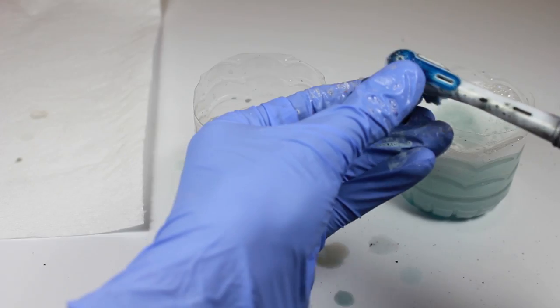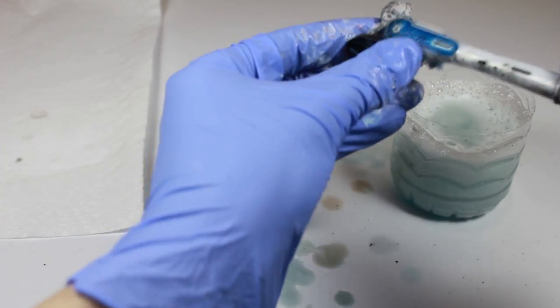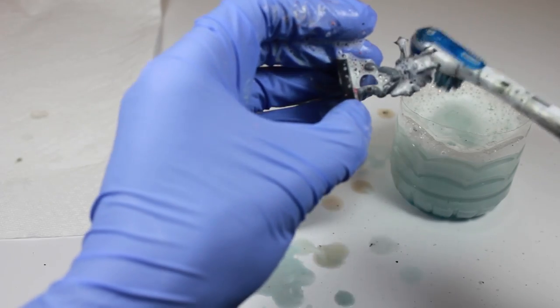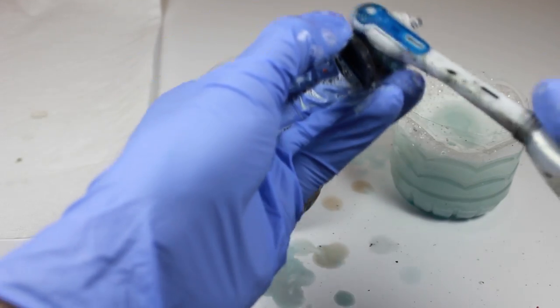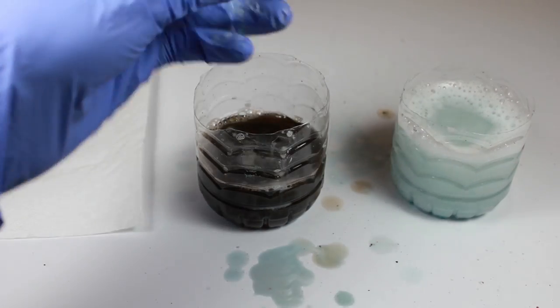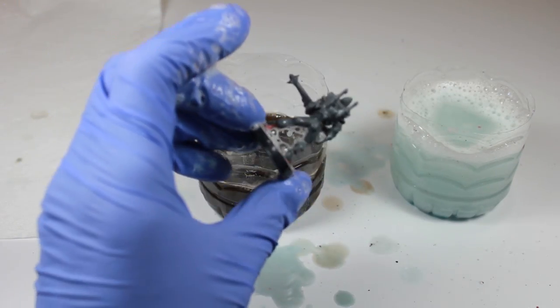And using SuperClean, it's extremely easy to just get the paint right off. And of course, I'm using an electric toothbrush, which really helps get into the cracks and crevices of the models. It's great for infantry, like doing these Eldar.